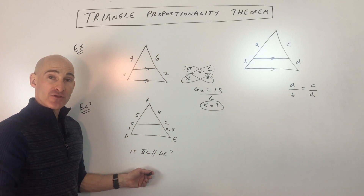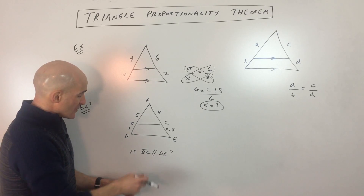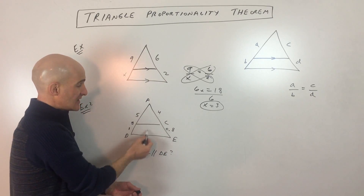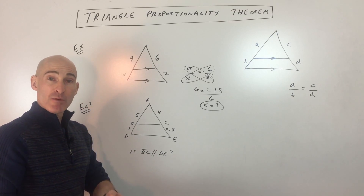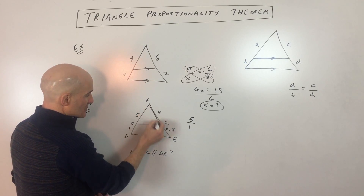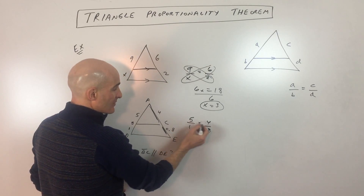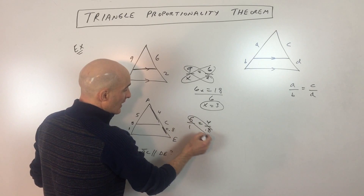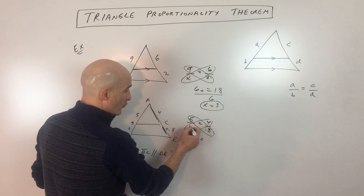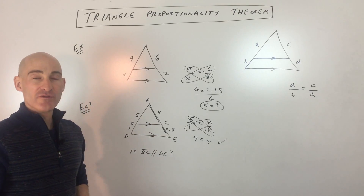Example two uses the triangle proportionality theorem in reverse — the converse of the proportionality theorem. It asks: is BC, this line segment, parallel to DE? We don't see arrows to indicate it's parallel, so let's set up a proportion and see if the ratio of five to one is the same as four to 0.8. We can cross multiply: five times 0.8 is four, and four times one is four. So yes, BC is indeed parallel to DE.